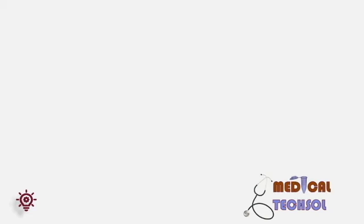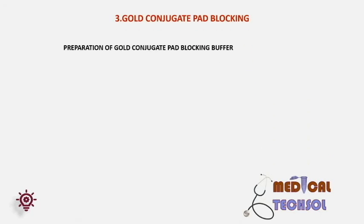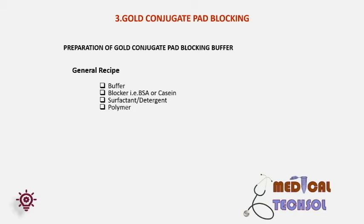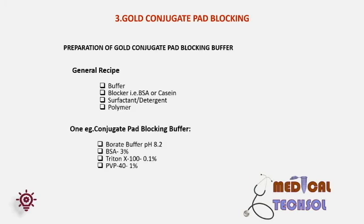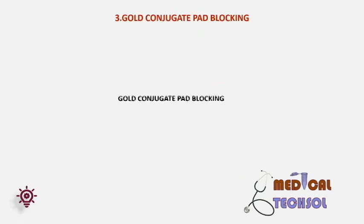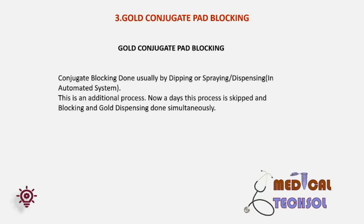Gold conjugate pad blocking. Preparation of gold conjugate pad blocking buffer — general recipe: buffer, blocker (BSA or casein), surfactant or detergent, and polymer. A typical example: borate buffer pH 8.2, BSA 3%, Triton X-100 0.1%, PVP 41%. Conjugate blocking is done by dipping, spraying, or dispensing in an automated system. Nowadays, this process is skipped and blocking and gold dispensing are done simultaneously.